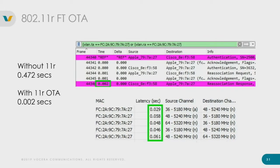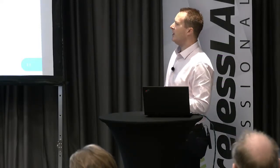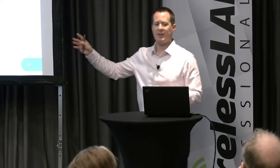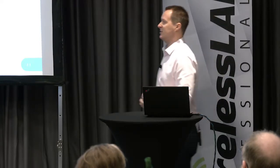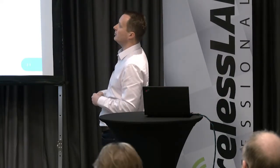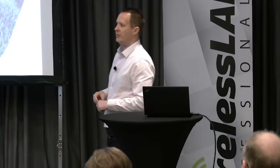With 11r over-the-air on, we shrink it dramatically. I measured from the authentication to the reassociation response — the total frames involved in the move — and took it from 472 milliseconds down to just two milliseconds. Yes, there's still scanning and degradation as we try to find somewhere to go, but once we found somewhere, the iPhone moved in two milliseconds including passing the keys around. The OmniPeek capture shows even data-packet-to-data-packet it was 30 to 60 milliseconds — well below what we need for voice.